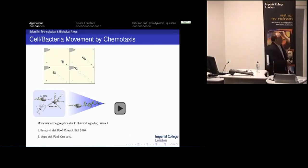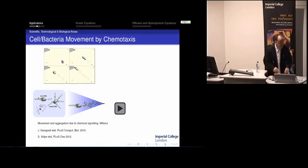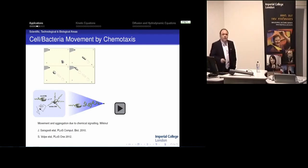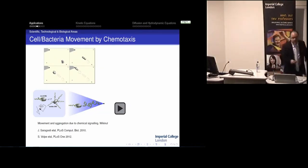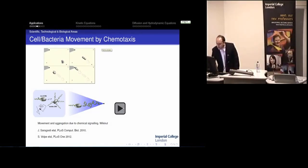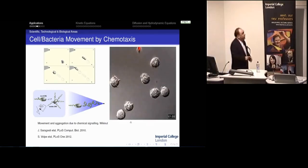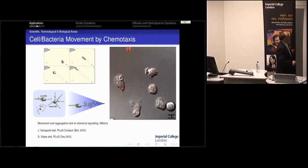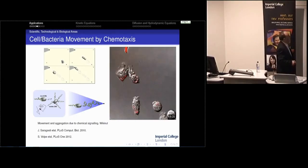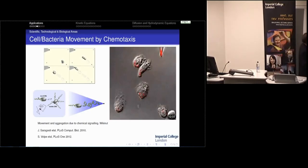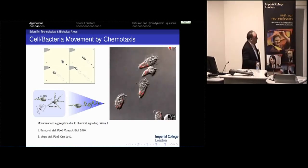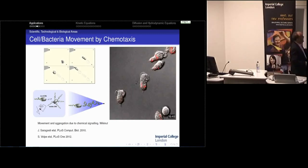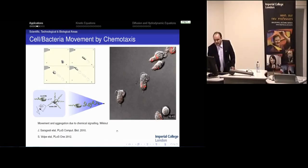Let me give you an example in a biological area: describing the collective movement of a large number of cells that direct their movement towards the source of certain chemical substances—this is cell movement by chemotaxis. In this movie from an open-source journal, you can see how using a pipette with a chemoattractant, the cells direct their movement towards the source of that chemical. The idea is to recover some understanding about the behavior of the density of those cells.